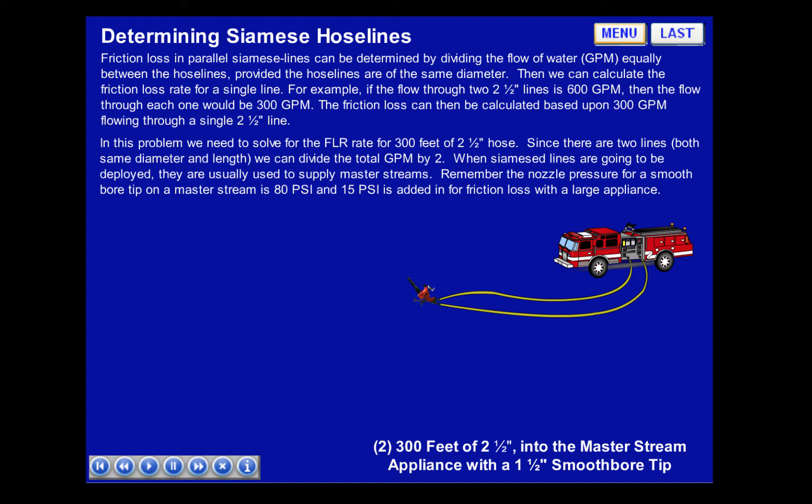Remember, the nozzle pressure for a smoothbore tip on a Master Stream is 80 PSI, and 15 PSI is added for friction loss with a large appliance.